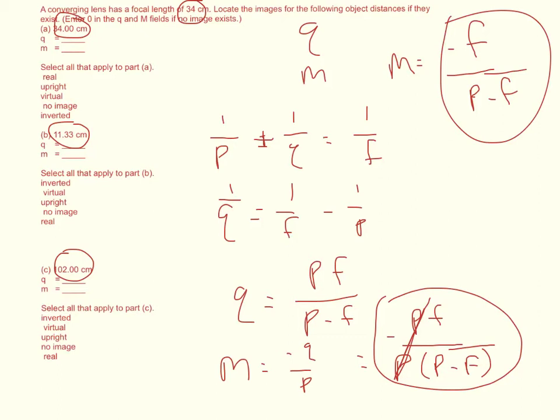So first of all, if you go ahead and plug in, so P is 34. If you plug in 34 here, the focal length is, I'm sorry, the focal length is 34. So 34 here.